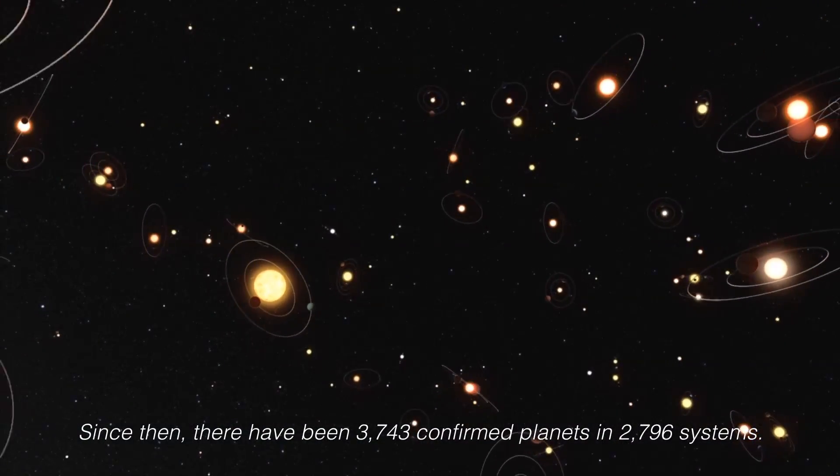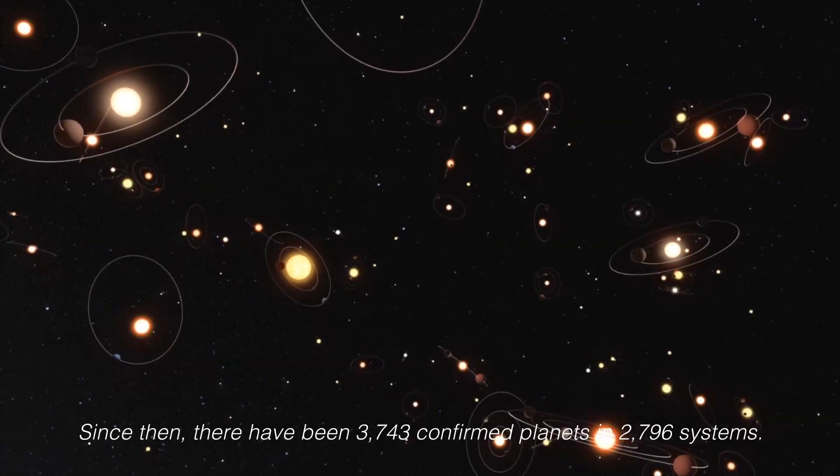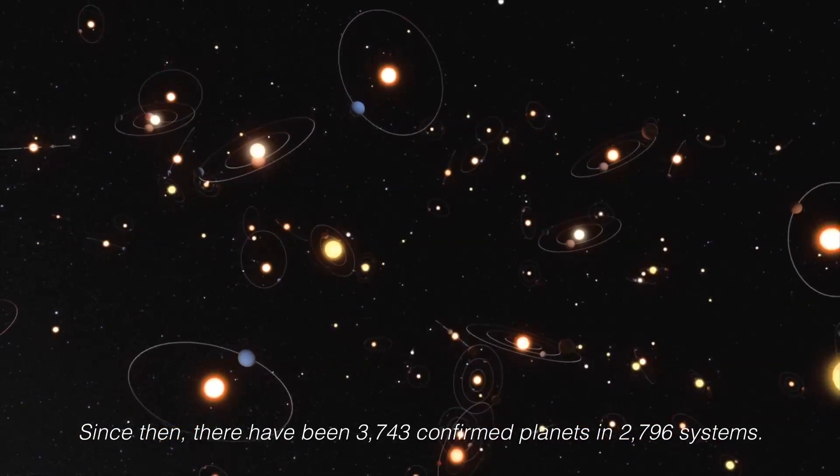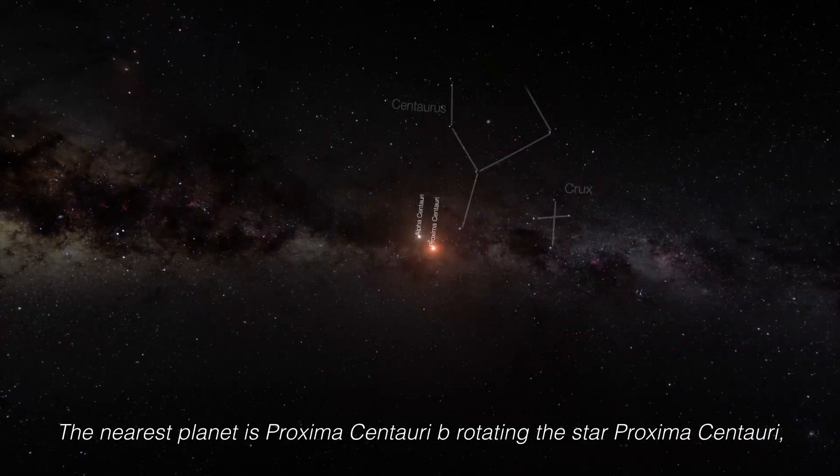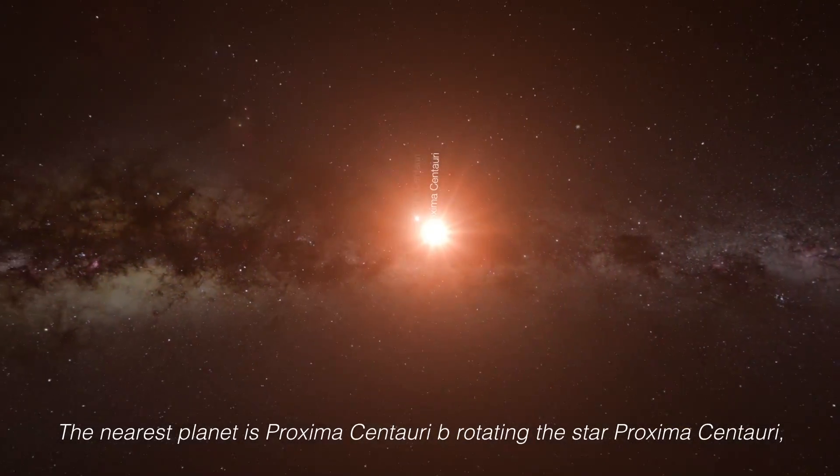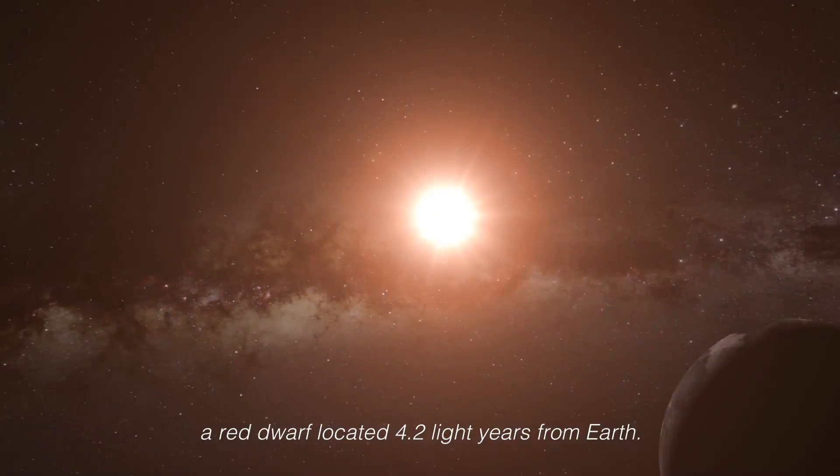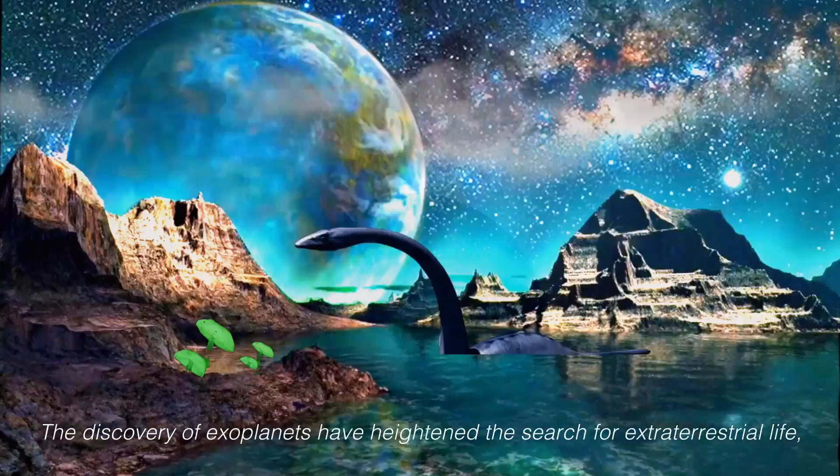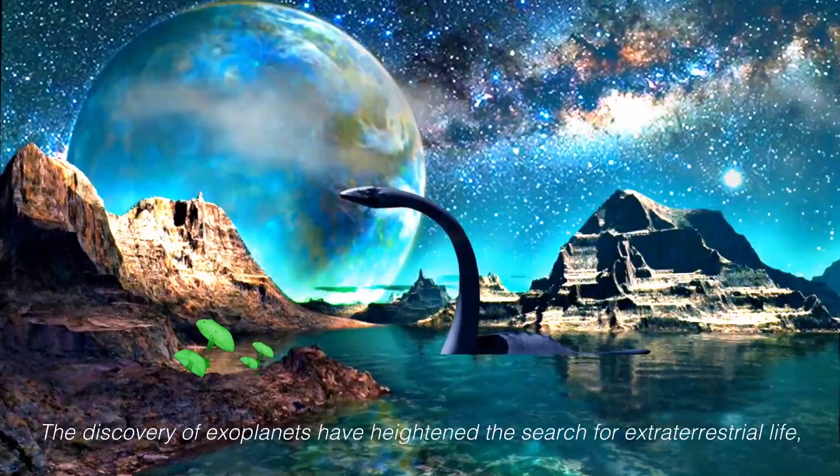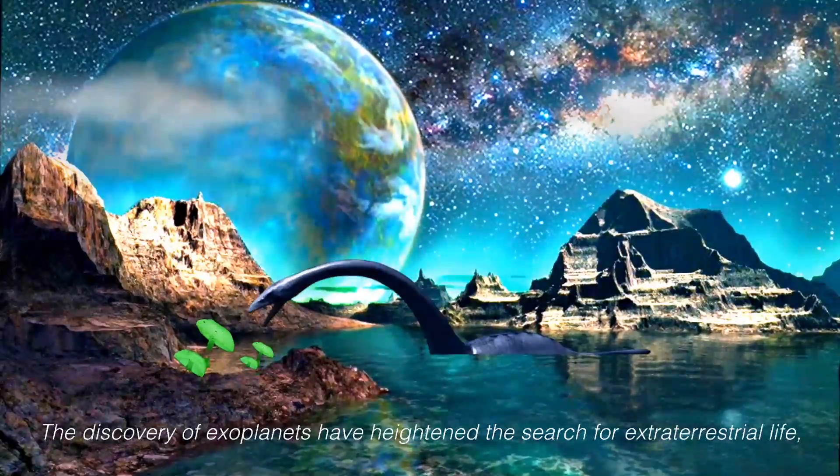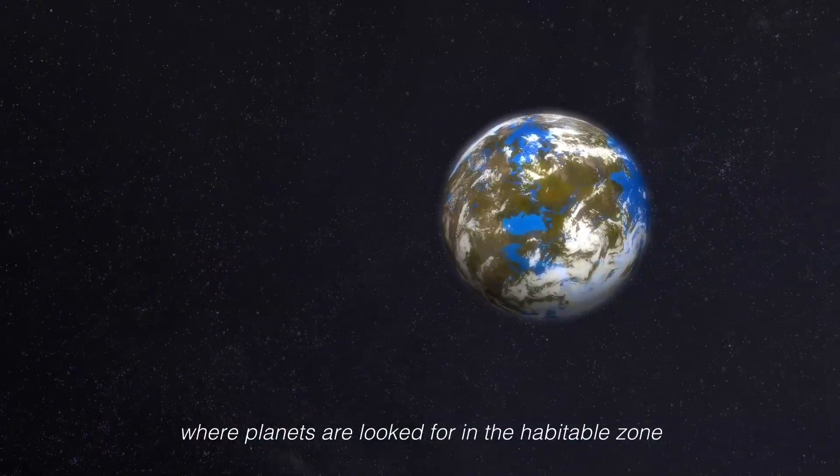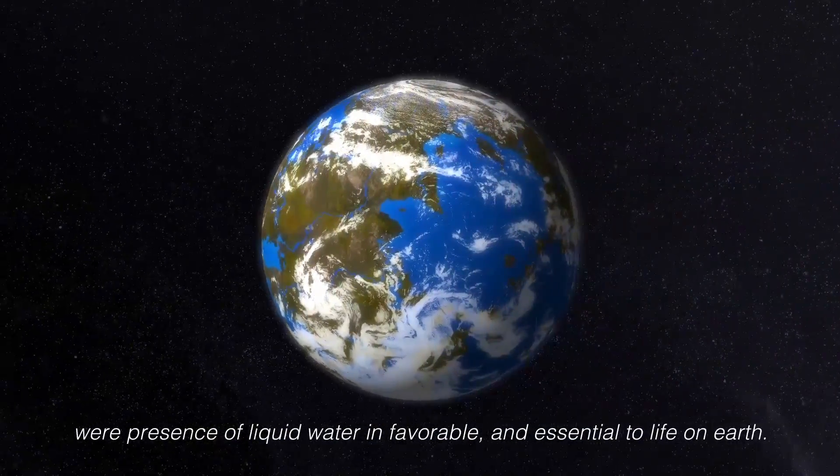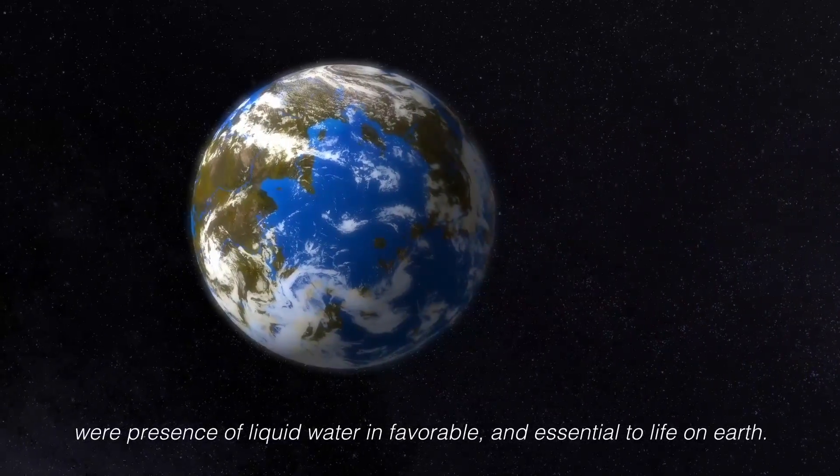Since then, there have been 3,743 confirmed planets in 2,796 systems. The nearest planet is Proxima Centauri b, rotating the star Proxima Centauri, a red dwarf located 4.2 light-years from Earth. The discovery of exoplanets have heightened the search for extraterrestrial life, where planets are looked for in the habitable zone where presence of liquid water is favorable, and essential to life on Earth.